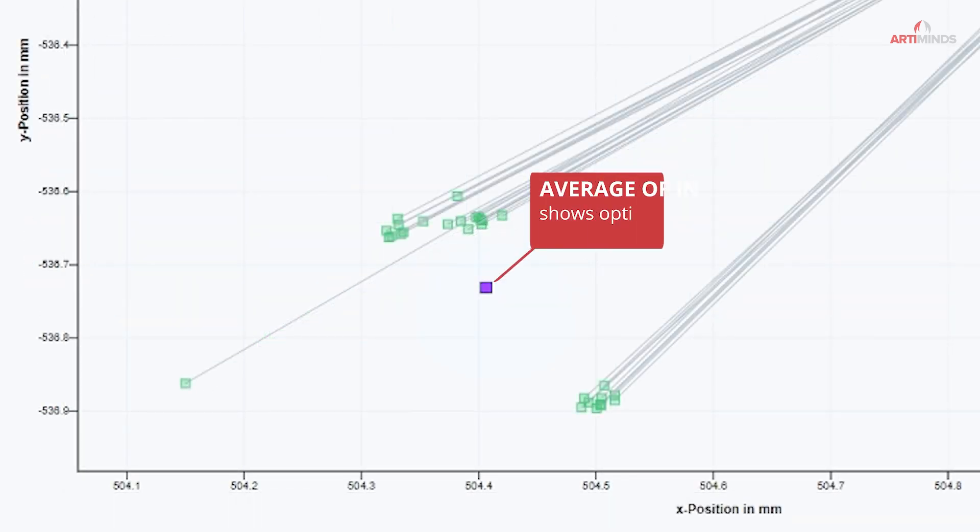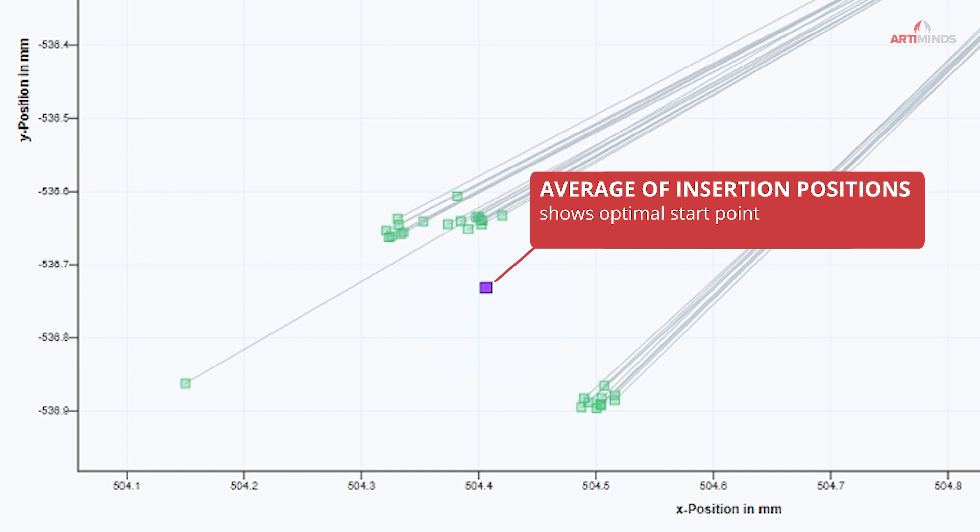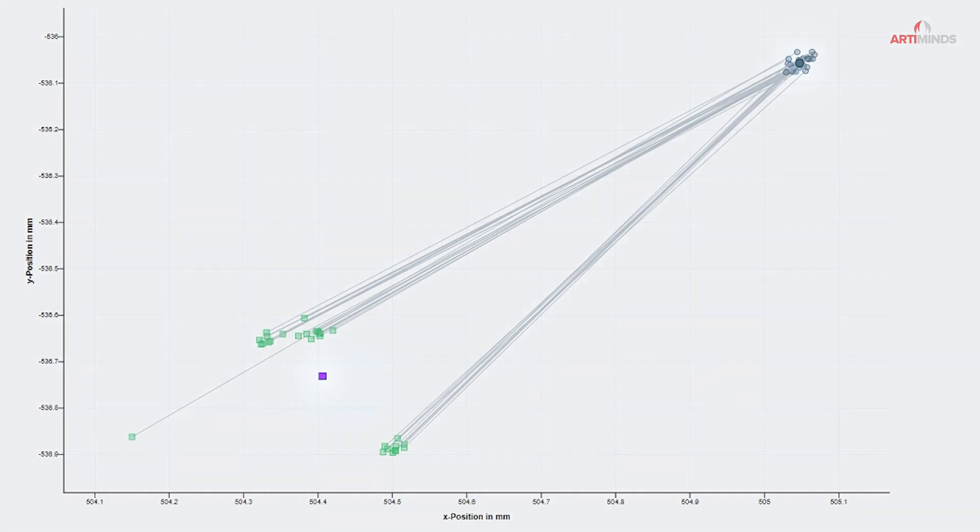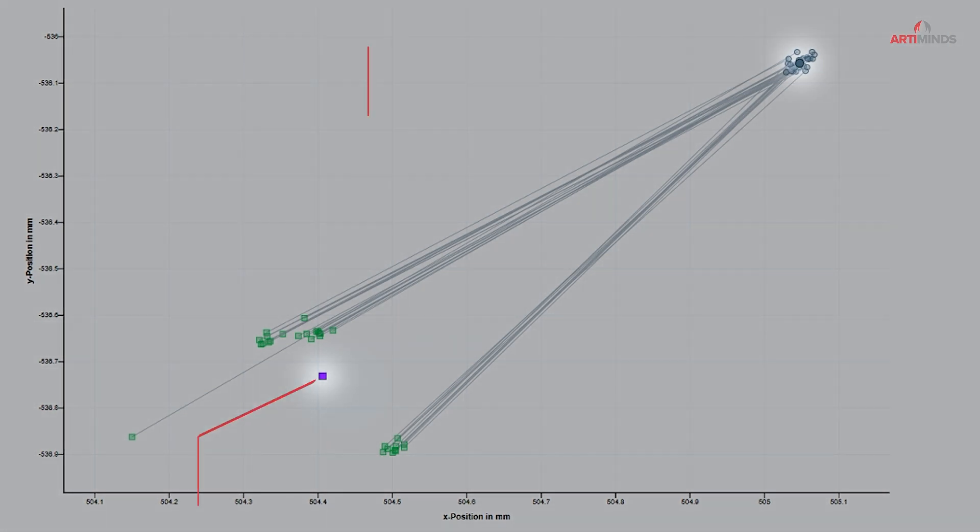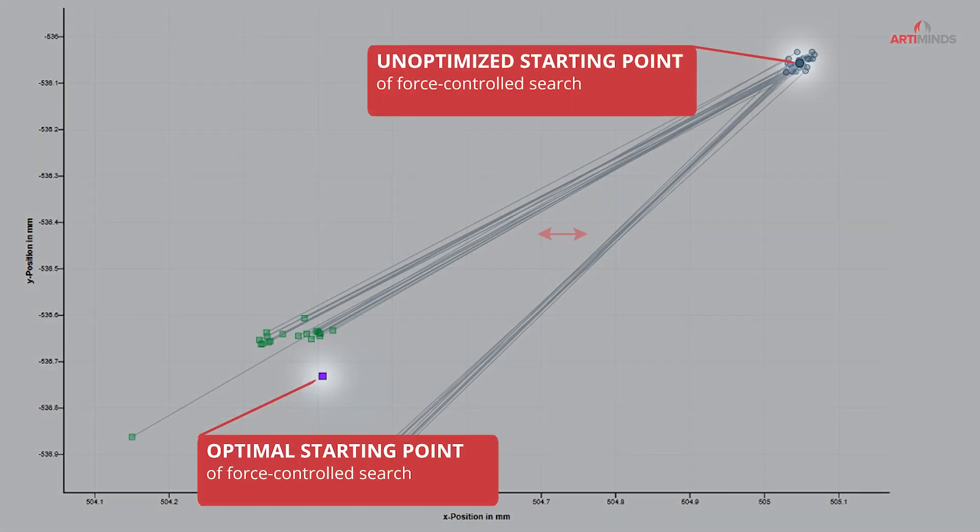The purple point shows the average of all detected insertion positions and therefore the optimal starting point for the force-controlled search. Looking at the coordinates, you will see that the unoptimized starting point is often up to 1.5 mm away from the optimal starting point.